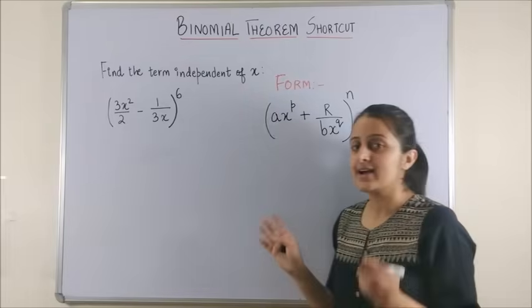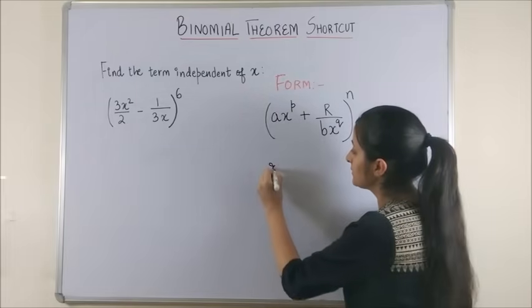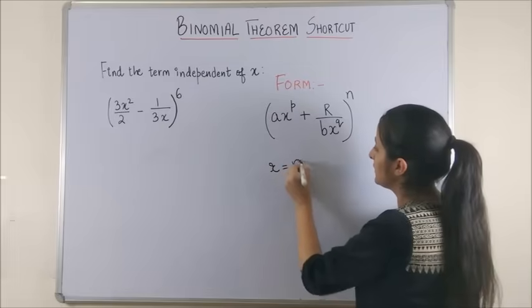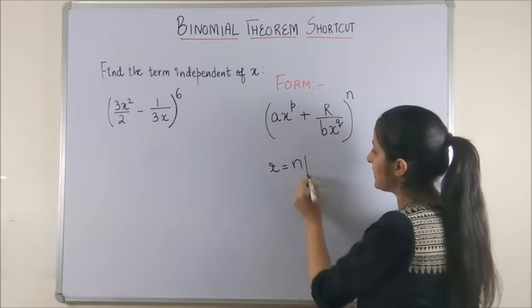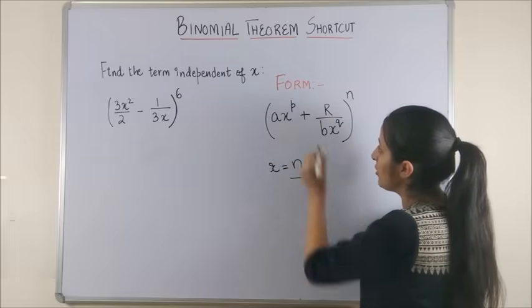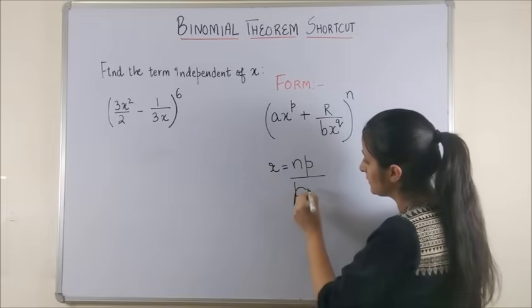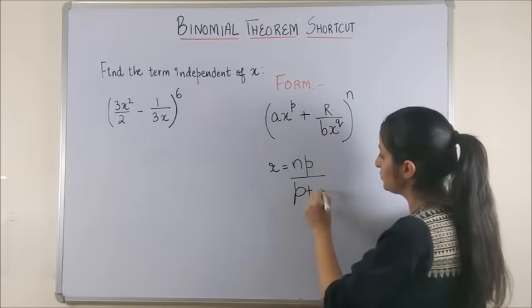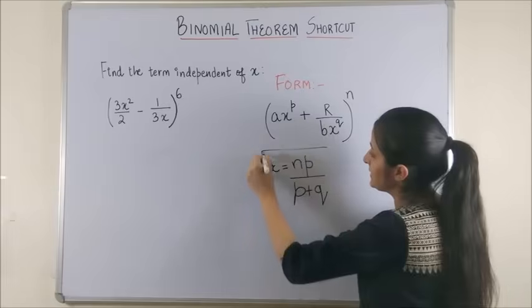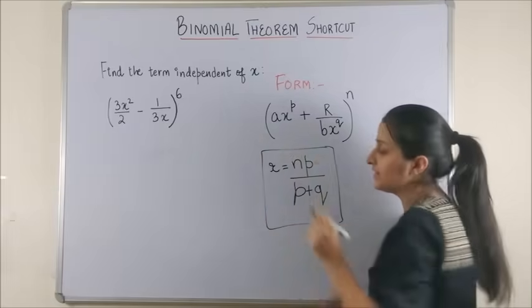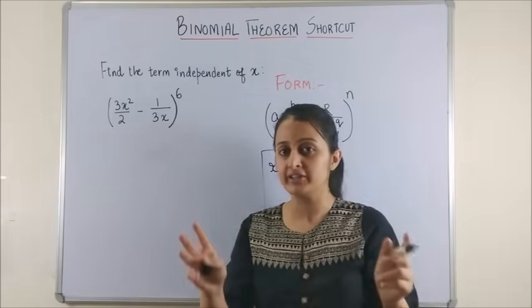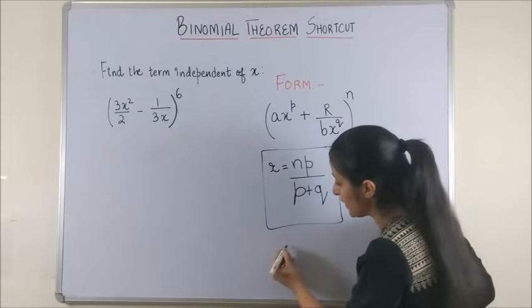In this case, our r becomes n into p (the power of this x) upon p plus q. That's it. And the moment you get your r, you know your general term is always t r plus 1.